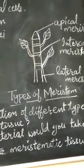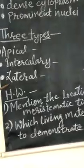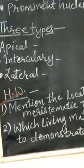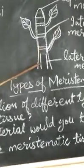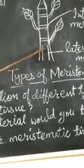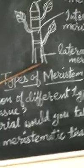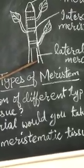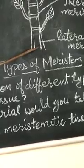Now, the third meristem, that is lateral meristem. This meristem is found along the lateral sides of stem and root. It is responsible for increase in their circumference, means in their thickness.